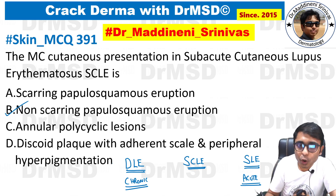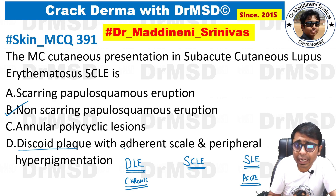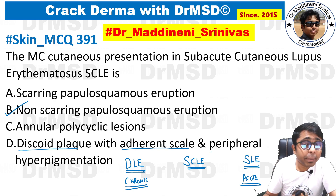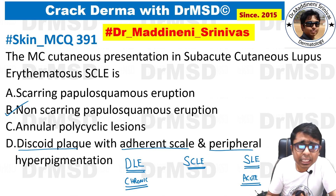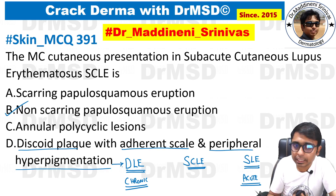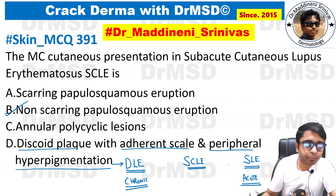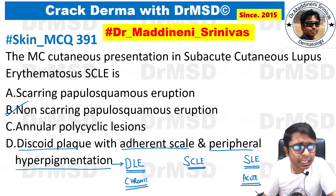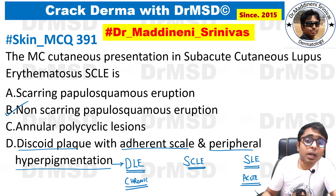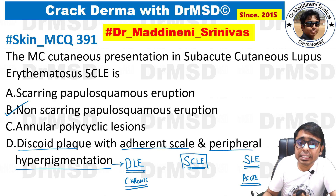For DLE, the clinical features correspond to option D — discoid plaque with adherent scaling and peripheral hyperpigmentation. This is the classical description of discoid lupus erythematosus. SLE will be discussed in another video, but our main concern here is SCLE.